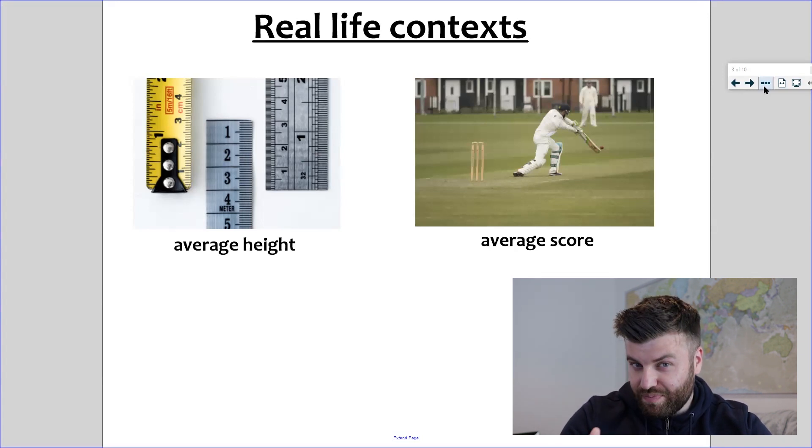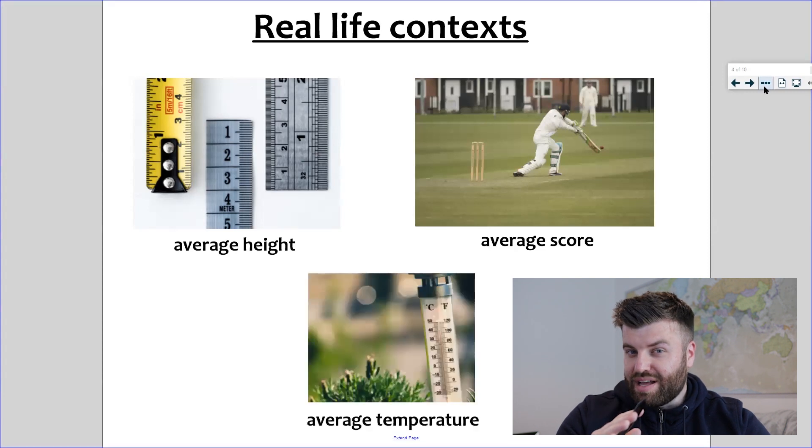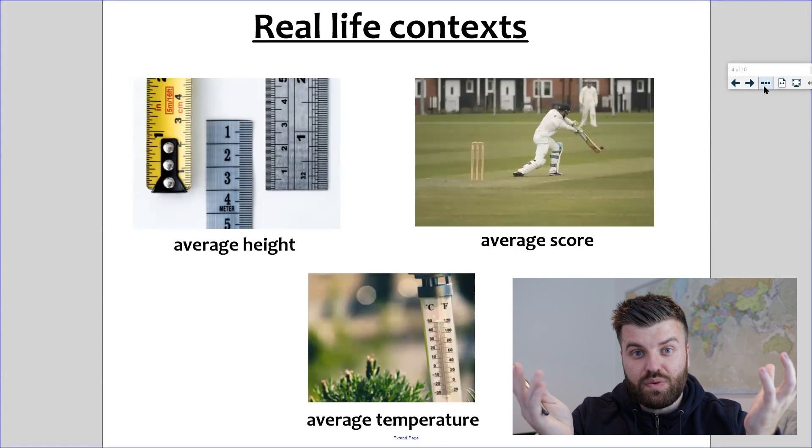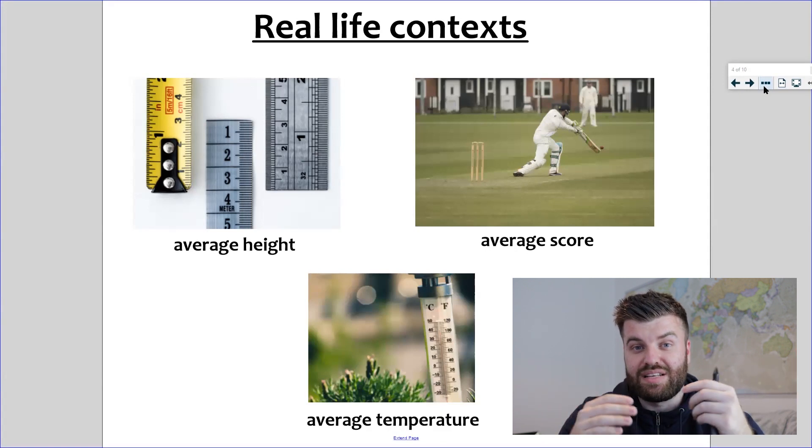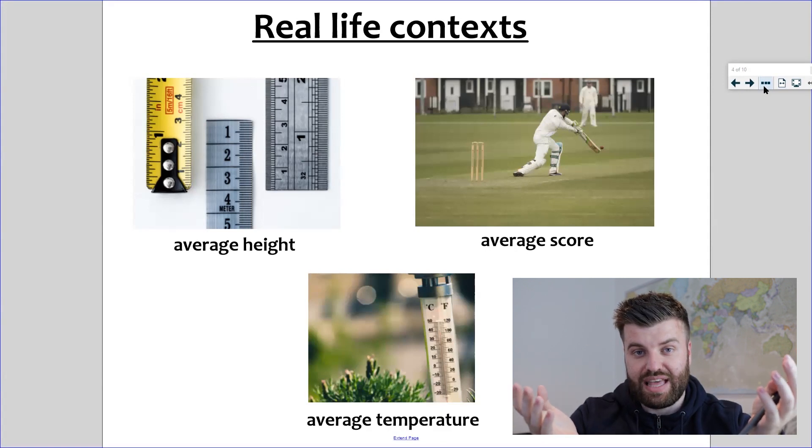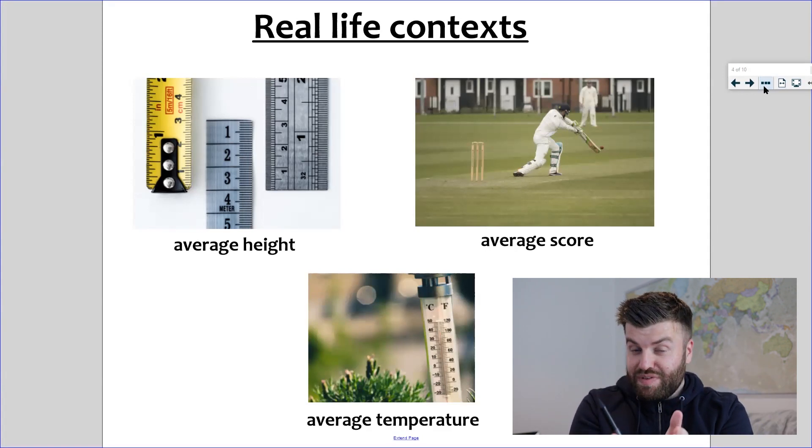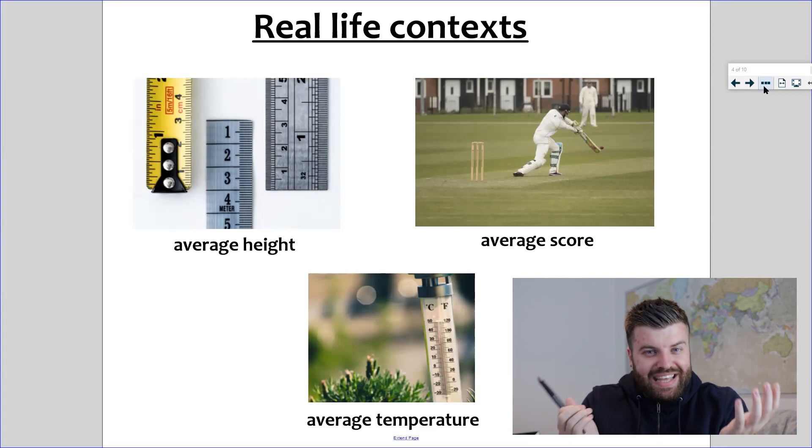The final example I've got for you is the average temperature. If you're going away on holiday, you may look at the weather forecast and it might say the average temperature for this time of year is 26 degrees. What they've done is they've gone from that time of year last year, the year before that, the year before that, and kept going back and taking an average. It gives you a rough idea of what to expect.